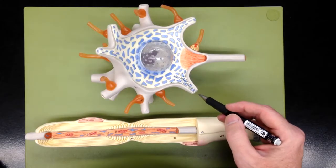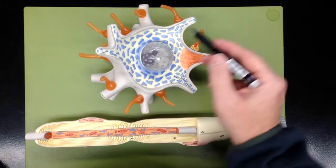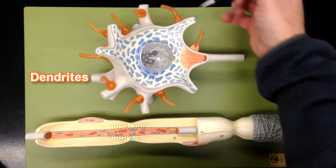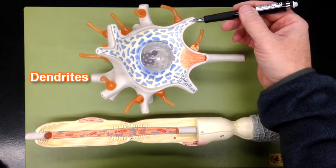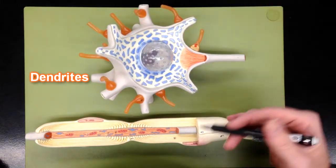This structure right here, and this structure here, and these structures here, here, here, and here, and even down here—these are dendrites. These dendrites have receptors on them and receive information from other cells.